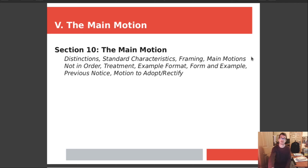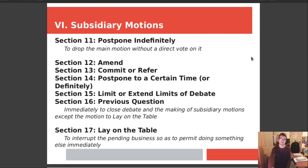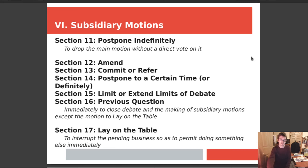Chapter 5 discusses everything about the main motion — a main motion on the floor, a main motion up for discussion. Chapter 6 covers subsidiary motions. Section 11 is to postpone a question indefinitely. Section 12 is to amend a motion. Section 13 talks about committing or referring a motion. Section 14 is about postponing a question to a certain time. Section 15 is about limiting or extending the limits of debate — there can be limits on debate, but every member has the right to speak, which is one of the four fundamental rights. Section 16 is about the previous question. Section 17 is laying something on the table, which means to interrupt the pending business so as to permit doing something else immediately.